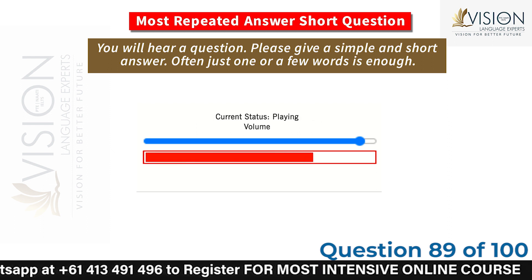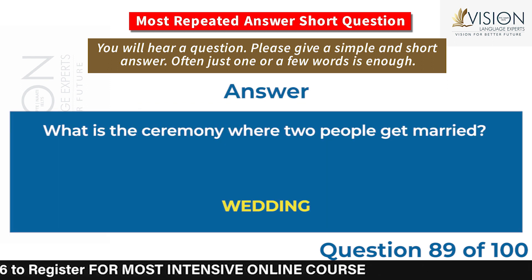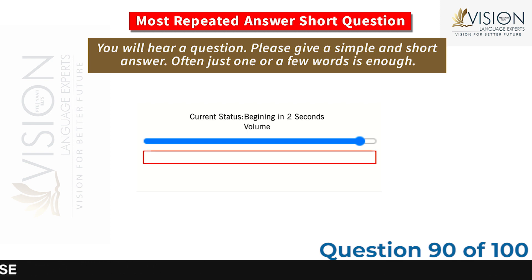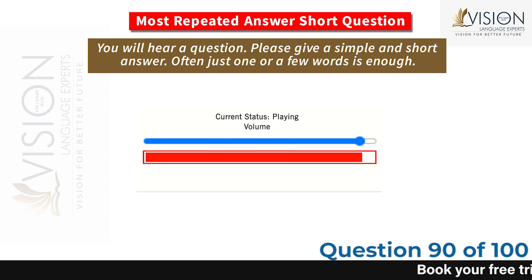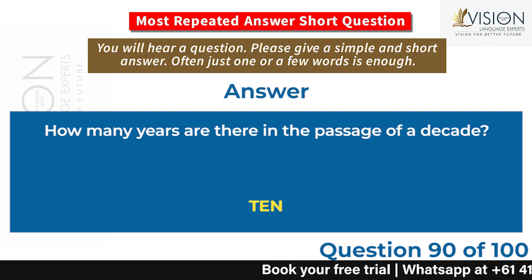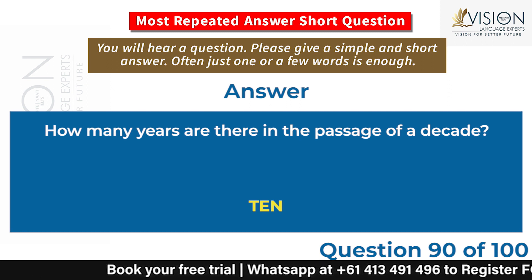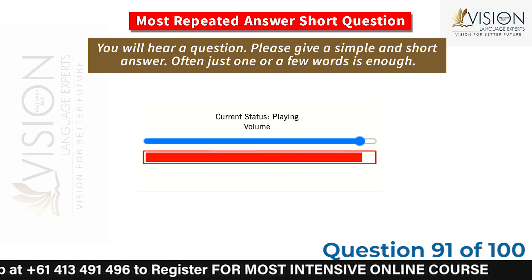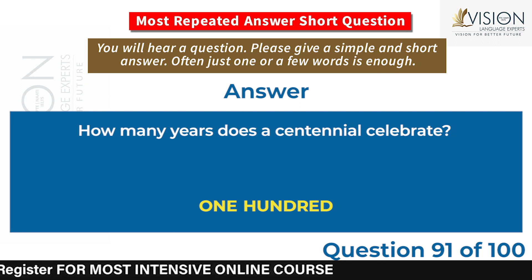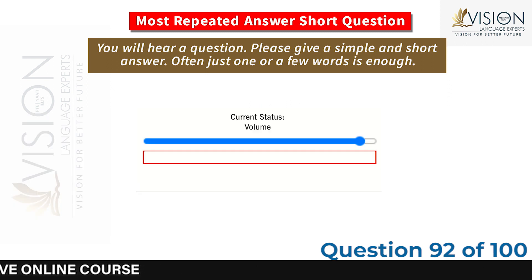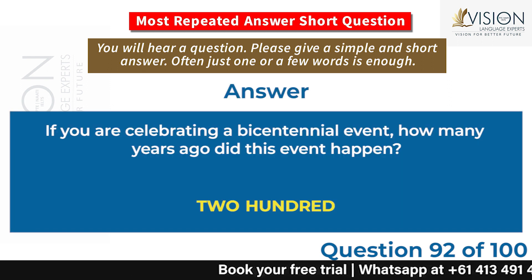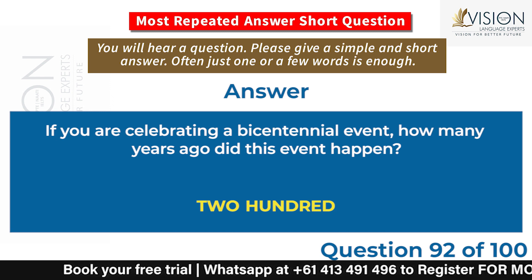What is the ceremony where two people get married? Wedding. How many years are there in the passage of a decade? Ten. How many years does a centennial celebrate? One hundred. If you are celebrating a bicentennial event, how many years ago did this event happen? Two hundred.